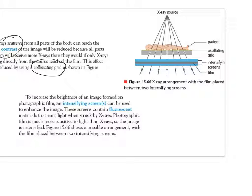Another way of increasing contrast by making the image brighter is by using an intensifying screen. These contain fluorescent materials that when hit by the x-rays, they emit light. Therefore the photographic film is not just receiving x-rays — it's receiving x-rays and the light given off by this fluorescent film, which is much more intense. So therefore your image is intensified.